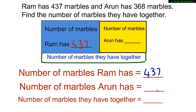The number of marbles Arun has is 368, which I will also note in the working. Now the number of marbles that they have together is nothing but their sum, so I add the two numbers.